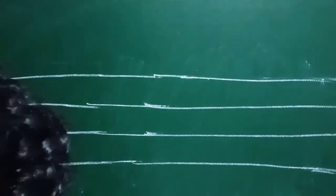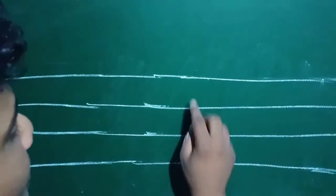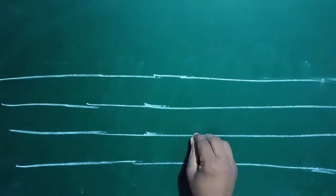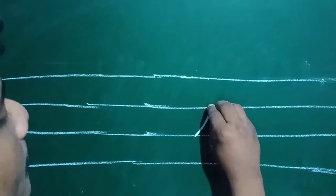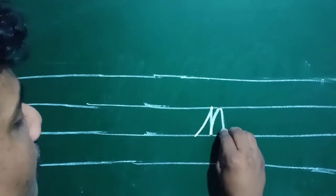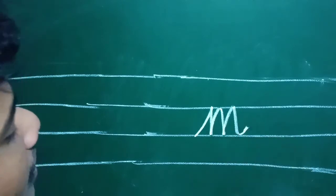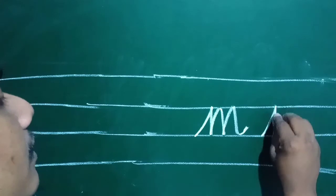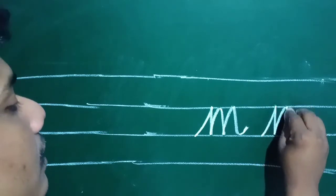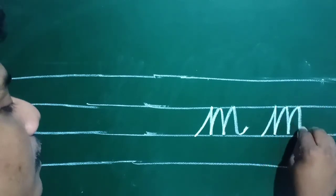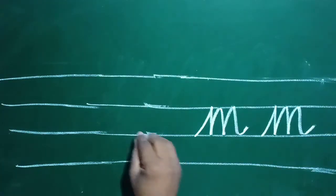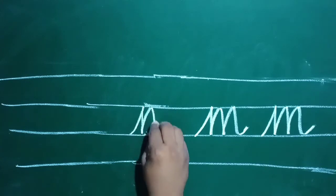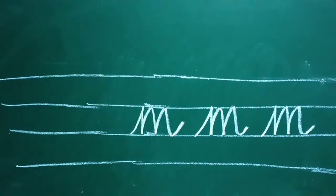How will we write small letter M? It starts from the third line — 1, 2, 3. Like this, starts from here, then go up, go up, go down. Small letter M. Once again — start from here, like this. Simple.